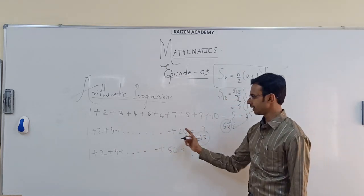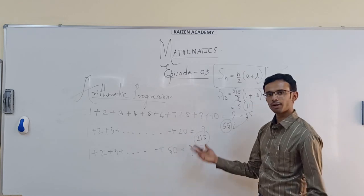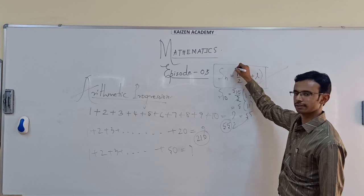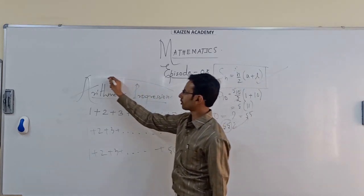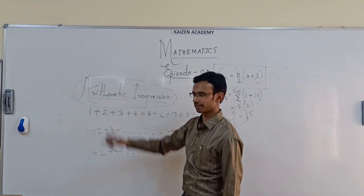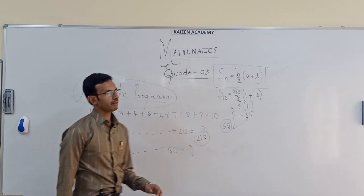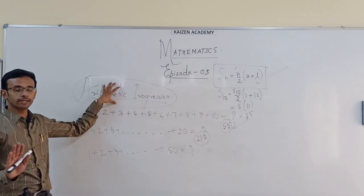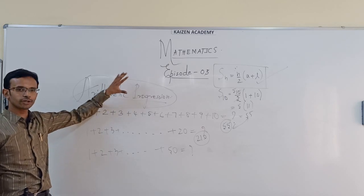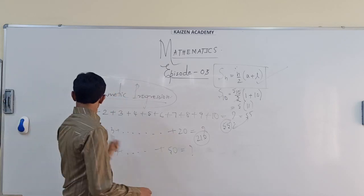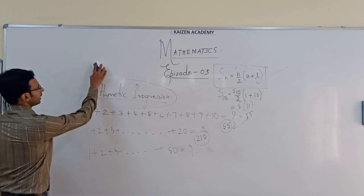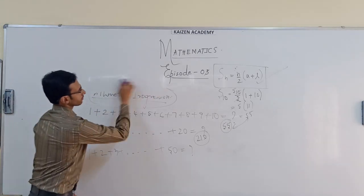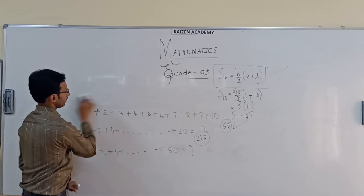We can use this formula not only for 1 to 10, but for 1 to 20, 1 to 50, 1 to 100, 1 to 1000 — as many as you wish, you can easily calculate using this formula. There are many more such formulas available in this chapter, which will make it like a puzzle where you will not only understand the concepts but also enjoy solving them. Go ahead and try 1 to 20 and 1 to 50 using this formula.